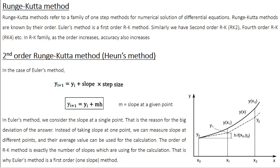Runge-Kutta refers to a family of one-step methods for numerical solution of differential equations. Runge-Kutta methods are known by their order. Euler's method is a first-order Runge-Kutta method. Similarly, we have second-order RK method, fourth-order method, etc. Typically, as the order increases, the accuracy of the method also increases.